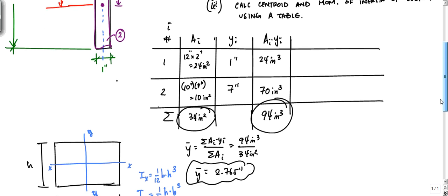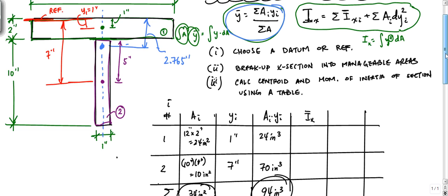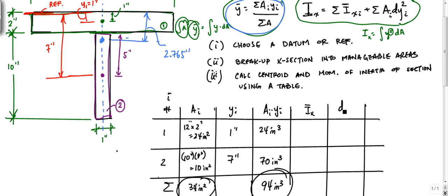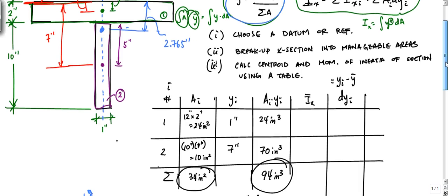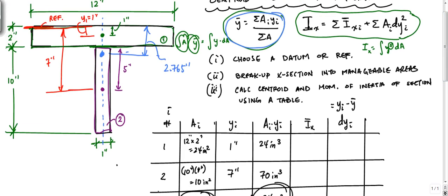Now that I have my centroid defined at 2.765 inches, I can proceed to the moment of inertia calculations. I need columns for the parallel axis theorem — the moment of inertia of an element about itself (I_x-bar), I already have a column for area A, and now I just need a column for d_y_i, which is the difference between the centroid of the element minus the centroid of the entire cross-section: Y_i minus Y-bar. Graphically, this distance is d_y1 and this other distance is d_y2.